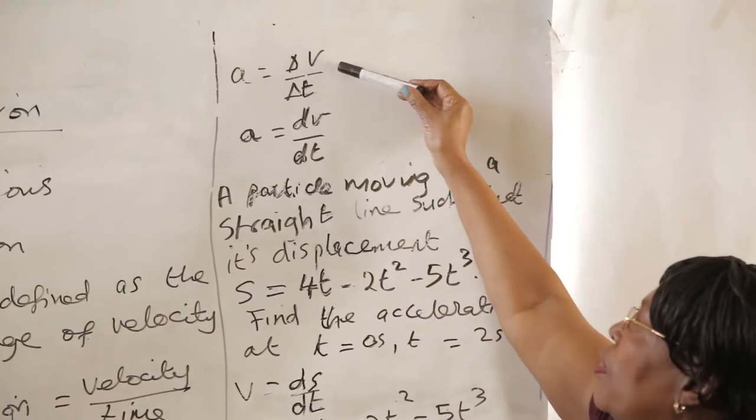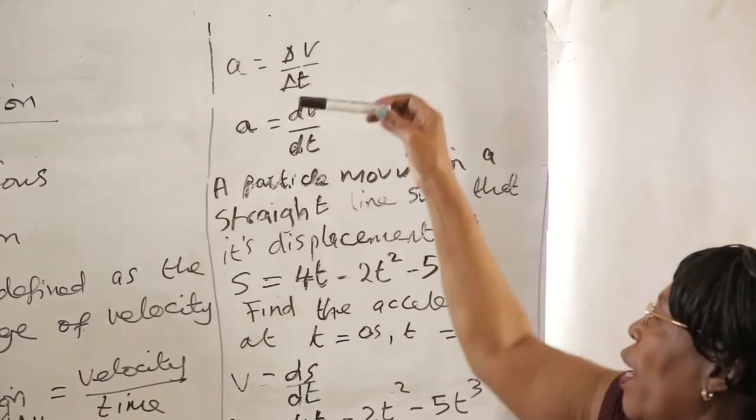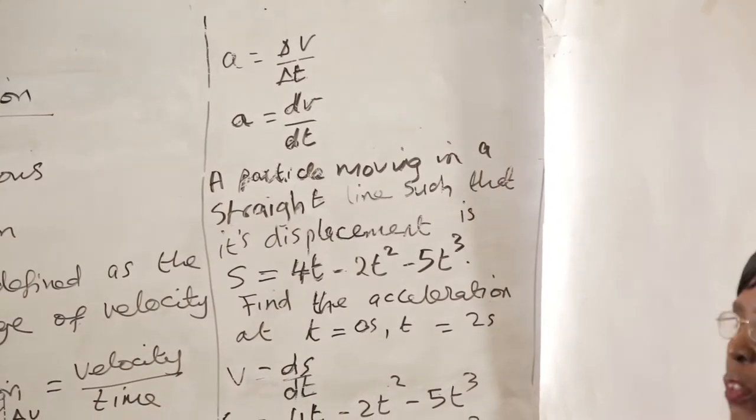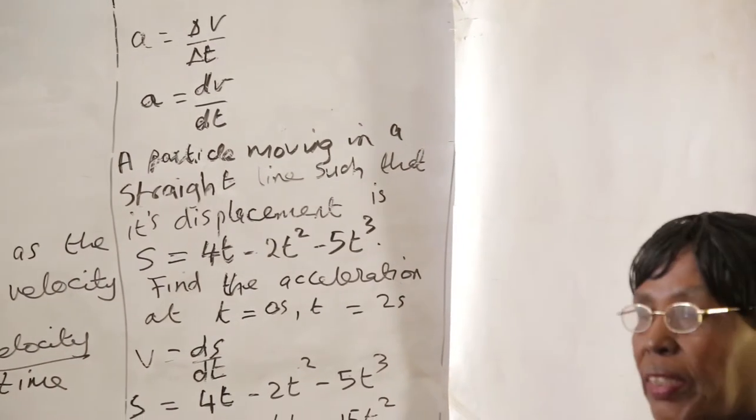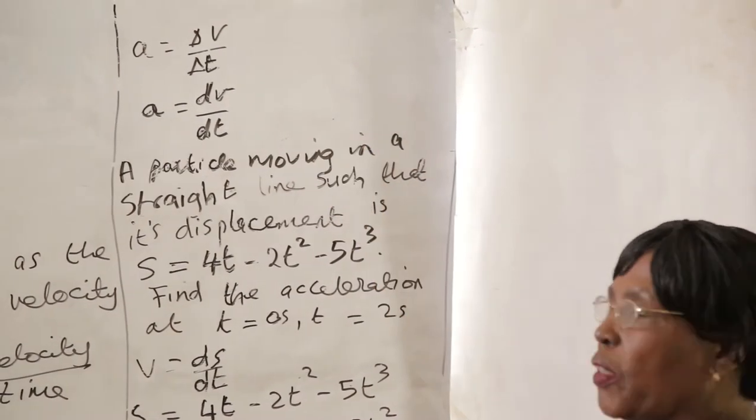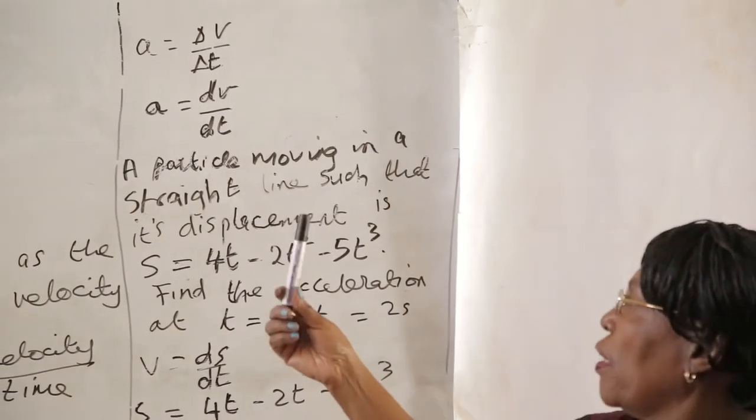If A is equal to dV/dt, acceleration is the differential function or the derivative of velocity with respect to time. So we are going to do an example.